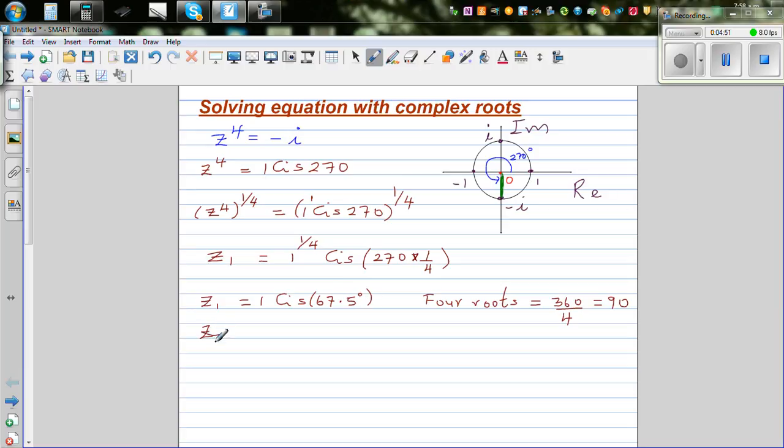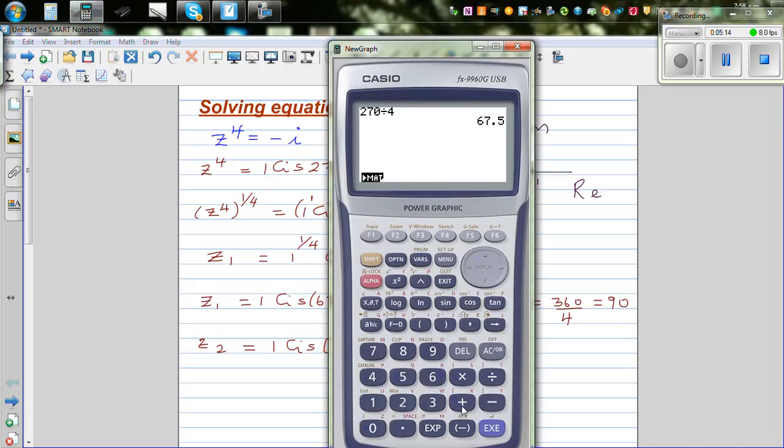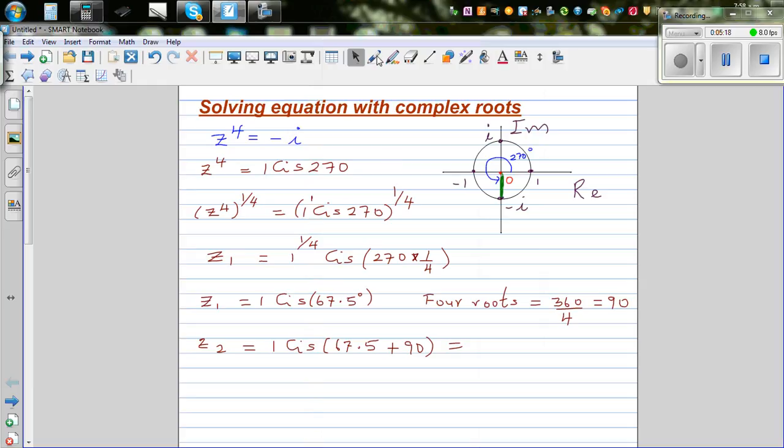So directly you can say z2 would be 1 cis 67.5 plus 90, which is 157.5. So this is 1 cis 157.5.